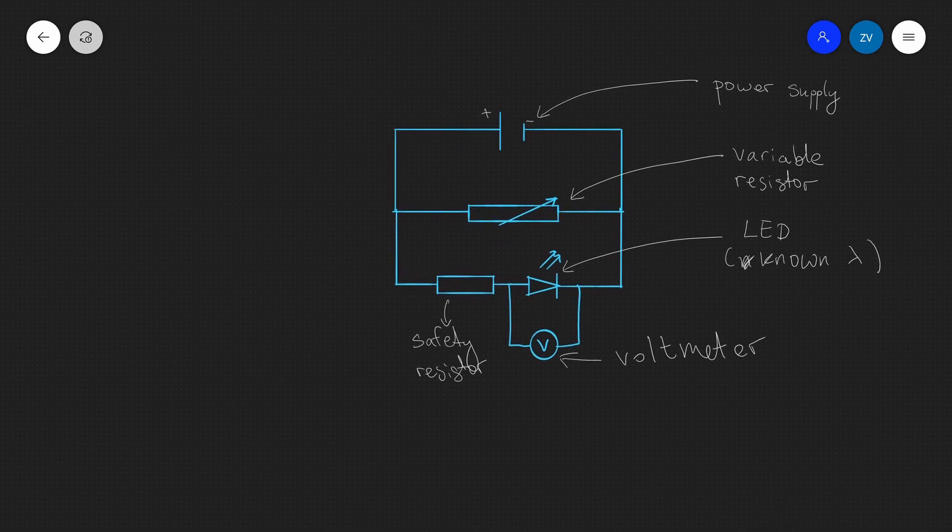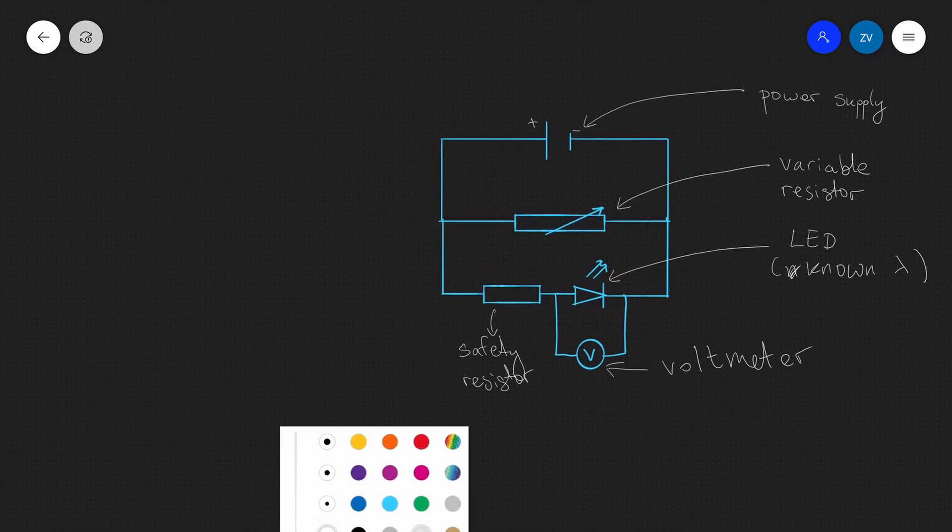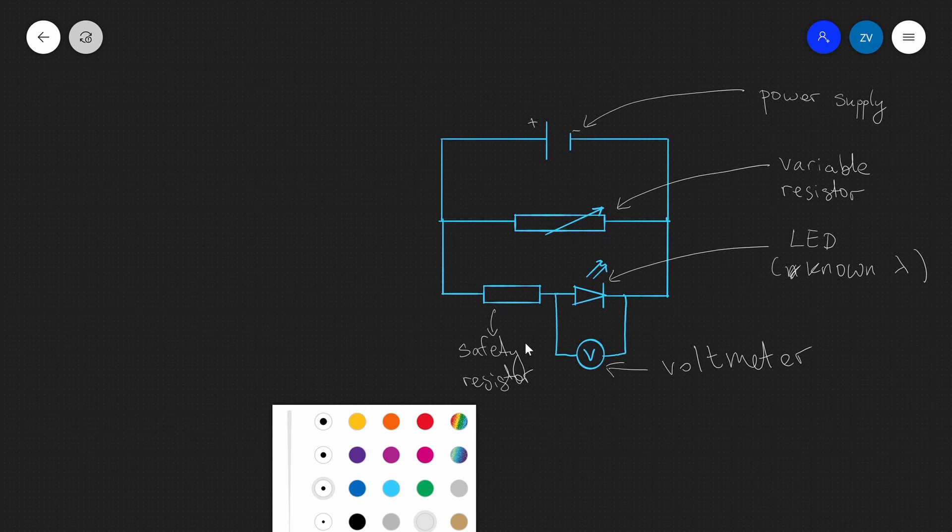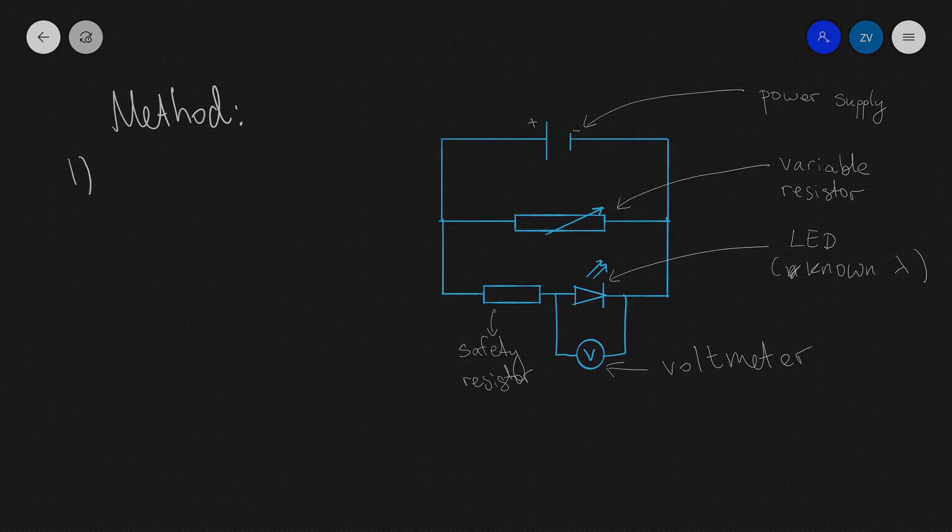Okay, well what is our method going to be? So let me just write that down. So method, assuming that we've set up the circuit as shown correctly, the first thing that we'll need to do would be to adjust the variable resistor so that the LED only just lights up.